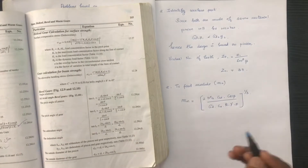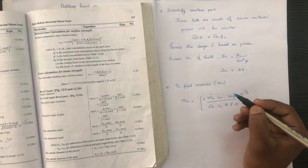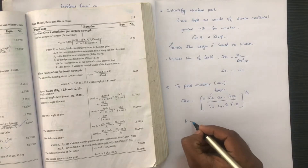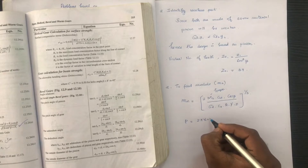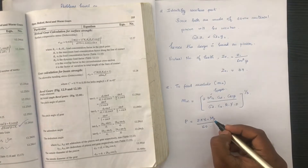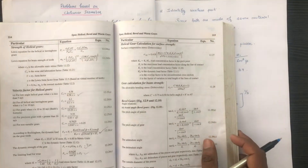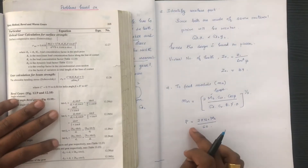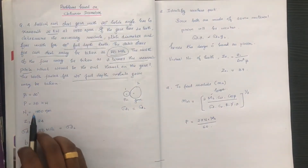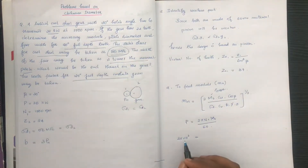Now let's substitute the values. First, the power is 35 kW, which equals 35 into 10 raised to 3 Watts. We calculate Mt, the torque, using: Mt = P divided by (2 pi N1 / 60).